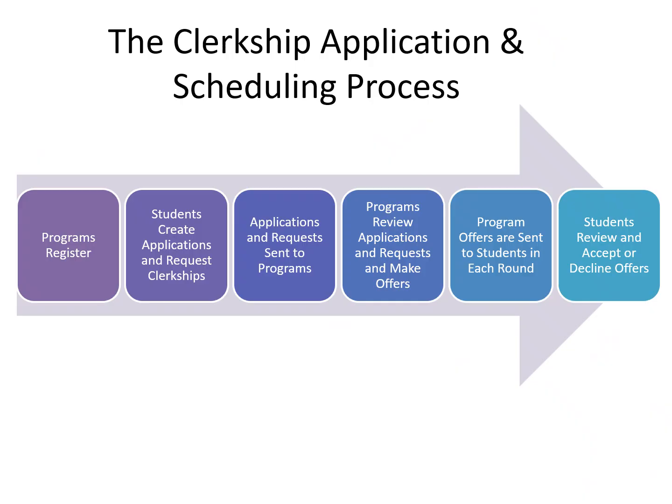Here is a high-level overview of the clerkship process. Each cycle starts with program registration. Students then create their applications and request clerkships from the participating programs. Student applications and requests are sent to programs where they are reviewed, and programs make offers. The offers are sent to students at the start of each round, and during rounds students accept or decline their offers.